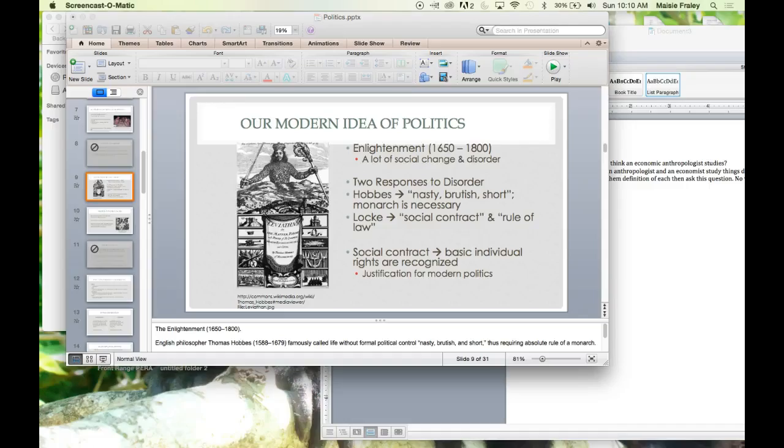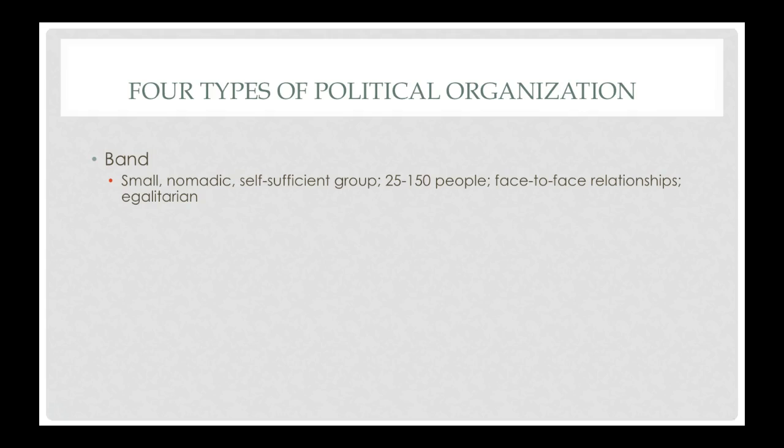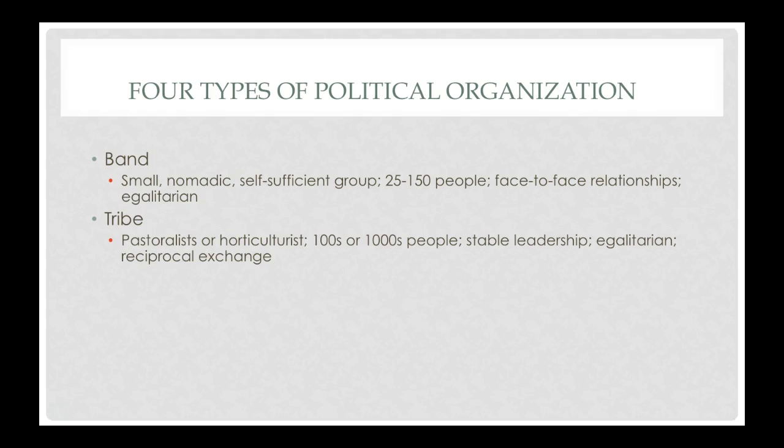The study of different types of political organizations in anthropology led to the development of four different types. The first is the band. Band societies are small, nomadic, self-sufficient groups — usually 25 to 150 people. They focus on face-to-face relationships and are egalitarian.